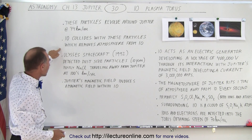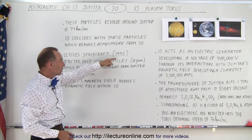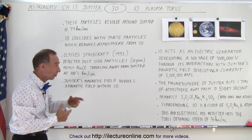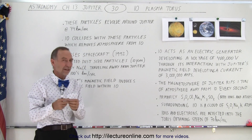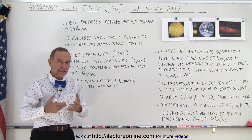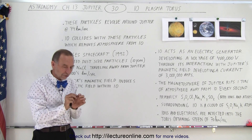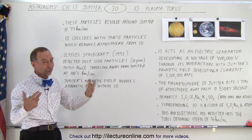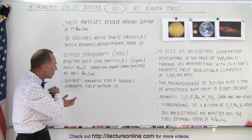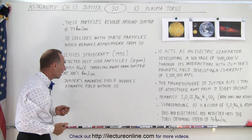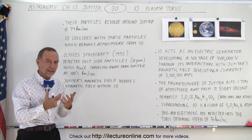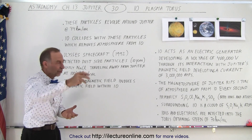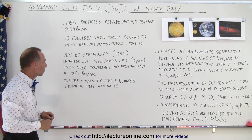The Ulysses spacecraft in 1992, which traveled past Io, also detected dust-sized particles as much as 10 micrometers in size. Now 10 micrometers is far greater than chemical compounds, so these are actually small dust particles, primarily made from sodium chloride — that's salt — among other things, and traveling away from Jupiter at hundreds of kilometers per second. These are probably being ionized and accelerated, shooting out of the Jupiter system at very high speeds.